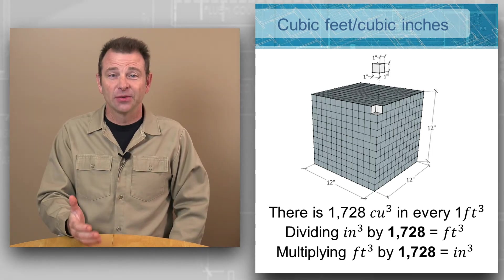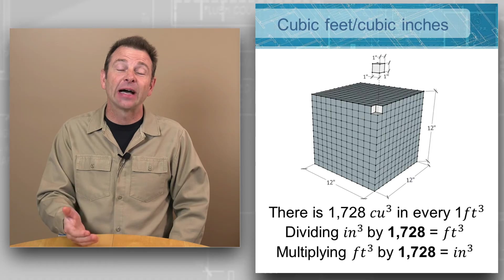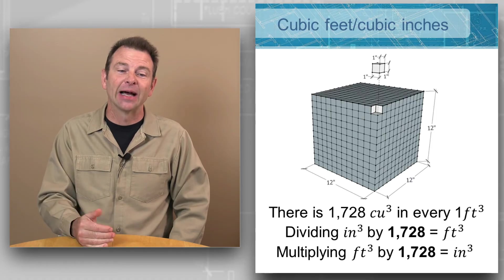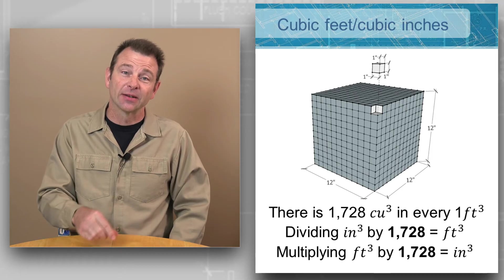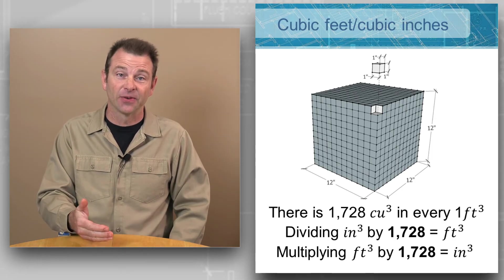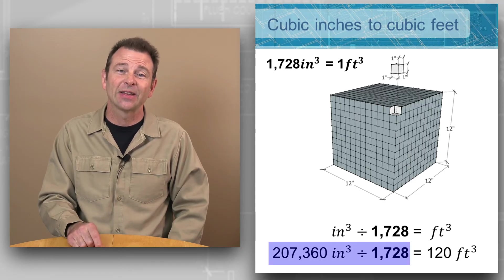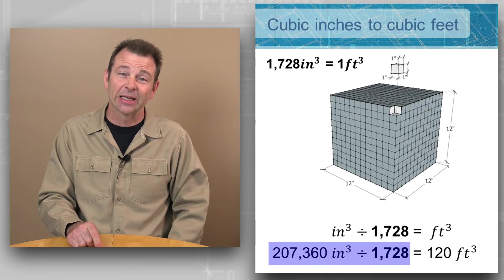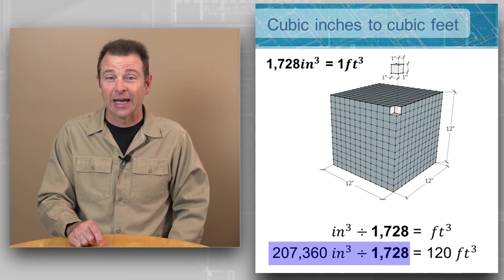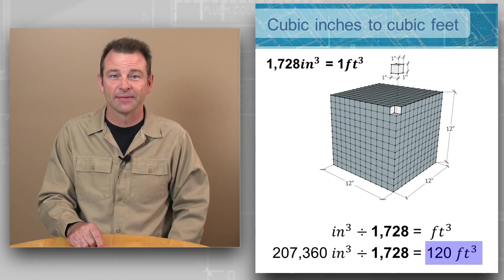Now we can use that number of 1,728 and we can divide or multiply it by whatever number we're trying to convert based on the units. An example of cubic inches to cubic feet: 207,360 cubic inches divided by that factor of 1,728 equals 120 cubic feet.